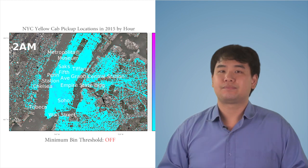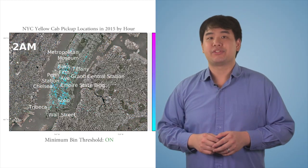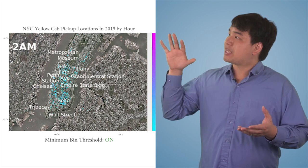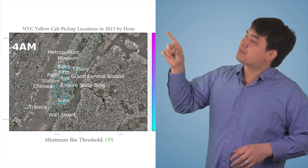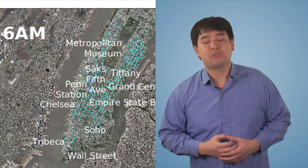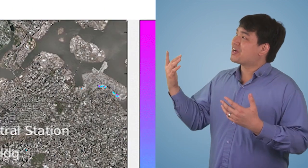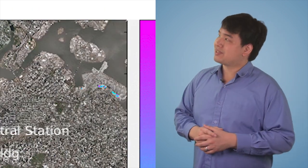One neat thing about MATLAB's web mapping service is that it can pull up notable landmarks in the city. So you can see how as the day progresses, commuting areas like Penn Station start getting a lot of people requesting taxis. But you can also see other areas where there seem to be a lot of pickup requests as well.